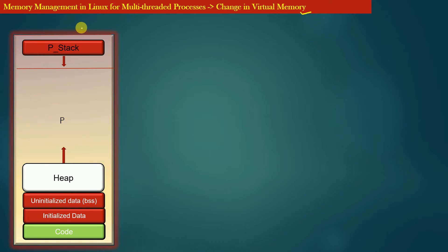Let us see what changes take place in the virtual memory of a process when a process P creates a thread. On the left hand side is the virtual address space of a process P which is in execution. This process has some virtual memory used for heap, some for initialized and uninitialized data segment, some for a code segment, and some portion used as stack memory. We already know that stack memory is used to support procedure call and return.